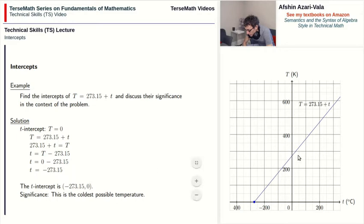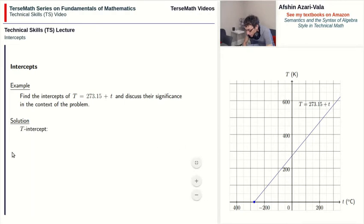Now let's take a look at the other intercept, capital T intercept. For the capital T intercept, we set lowercase t equal to zero in the equation. In this case, the equation has been solved for capital T, so all you have to do is replace lowercase t with zero. Simplify, and now we have our intercept. The capital T intercept is zero, 273.15.